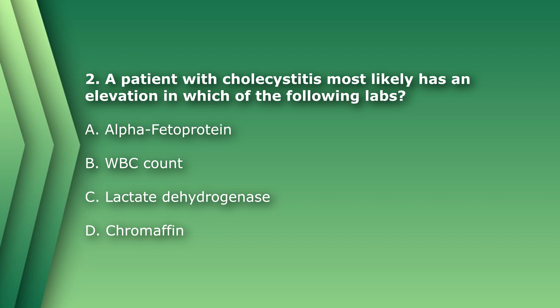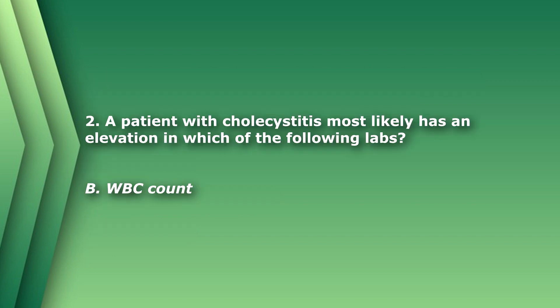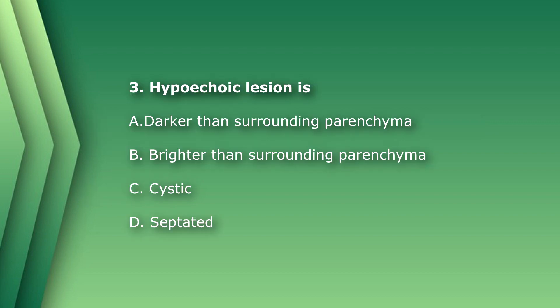Question 2: A patient with cholecystitis most likely has an elevation in which of the following labs? A) alpha-fetoprotein, B) white blood cell count, C) lactate dehydrogenase, or D) chromaffin. The answer is B) white blood cell count. Patients with cholecystitis have inflammation in their body, and when there's inflammation you have leukocytosis, or increased white blood cells.